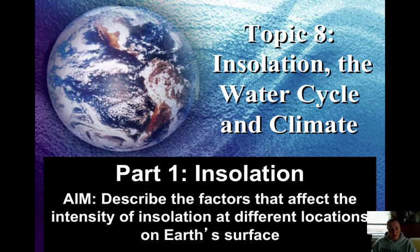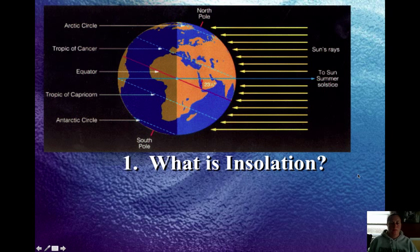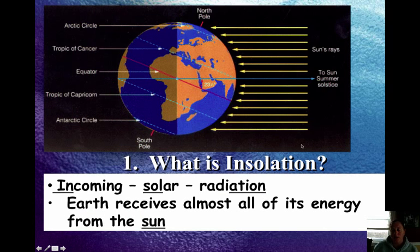Today we're going to discuss insulation and describe the factors that affect the intensity of insulation at different locations on Earth's surface. So what is insulation? If you recall from our prior units, insulation is a combination of three words that scientists came up with to describe incoming solar radiation. This is sunlight coming into Earth, and Earth receives almost all of its energy from the Sun.